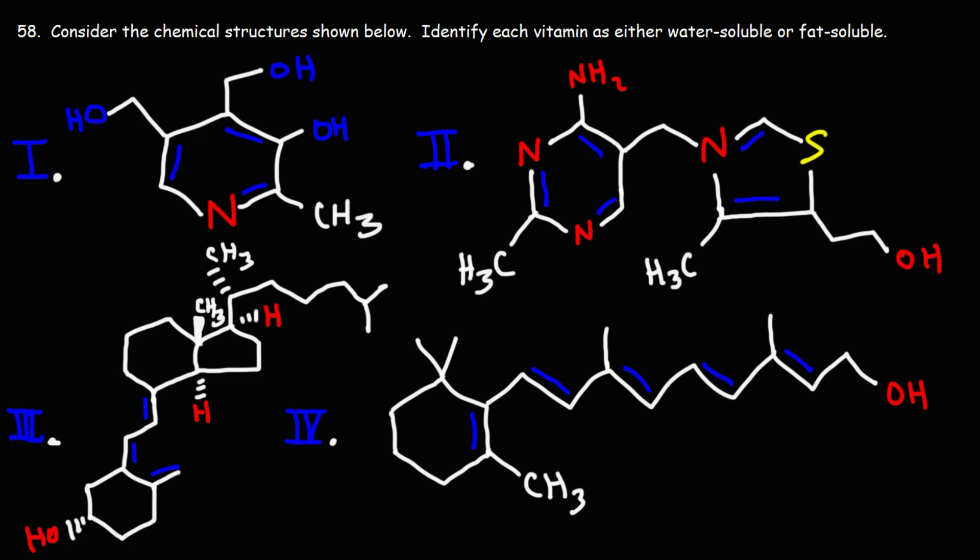So let's start with number one. What we have here is vitamin B6. This is known as pyridoxine. Is pyridoxine a water-soluble vitamin or a fat-soluble vitamin? Looking at the functional groups, we have a lot of hydroxyl groups. So there's a lot of hydrogen bonds here.